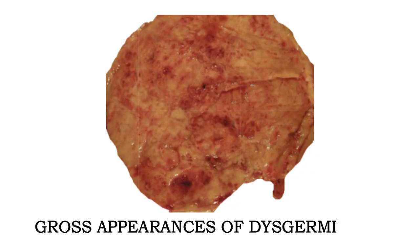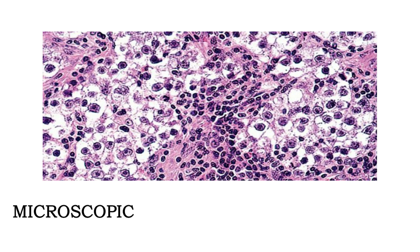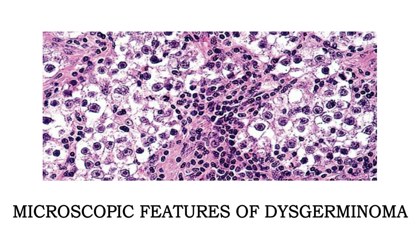This photograph shows the gross appearance of dysgerminoma. You can appreciate a yellowish, tan-brown, homogeneous appearance with areas of hemorrhage and necrosis. This photograph shows the microscopic features of dysgerminoma, in which you can see clear cells present in groups, sheets, and tubules. They have rounded nuclei with one or two prominent nucleoli. These cells are separated by thin fibrous tissue septa containing lymphocytic infiltration.